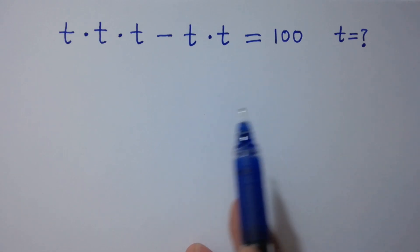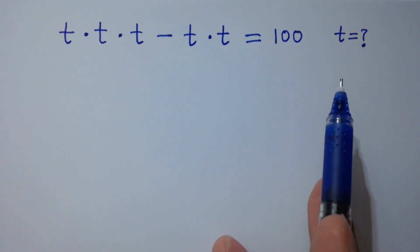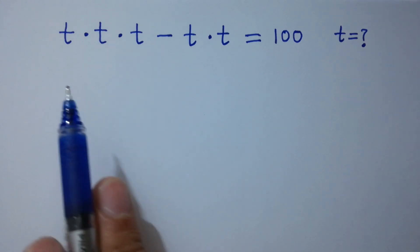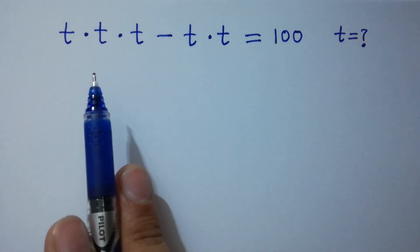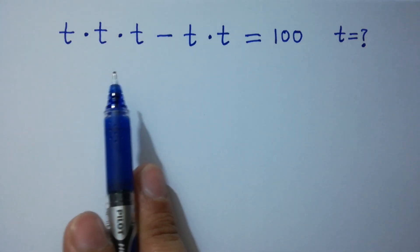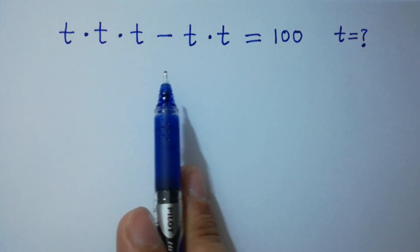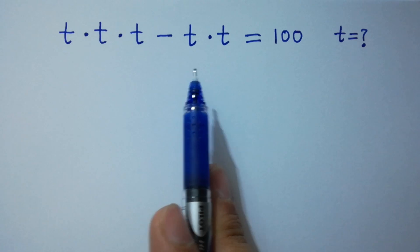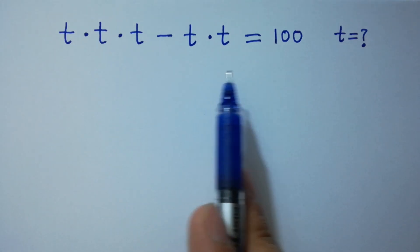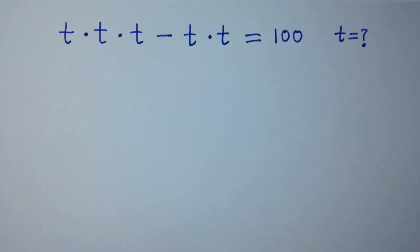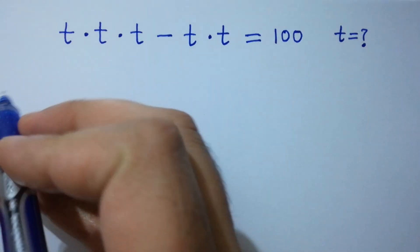Hello friends. Find the value of t if t times t times t minus t times t equals 100. Let's have a solution.